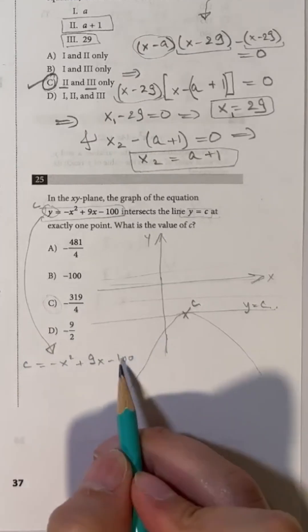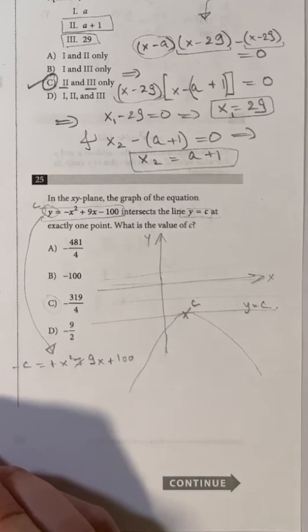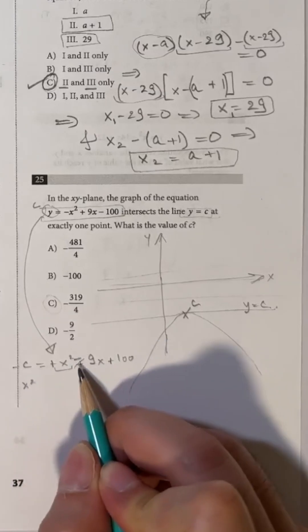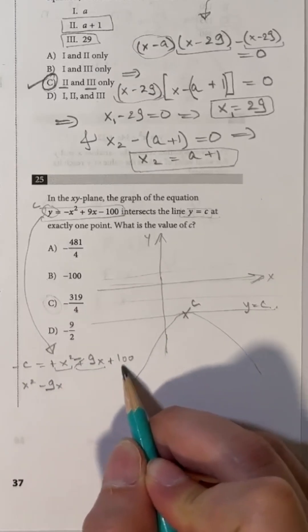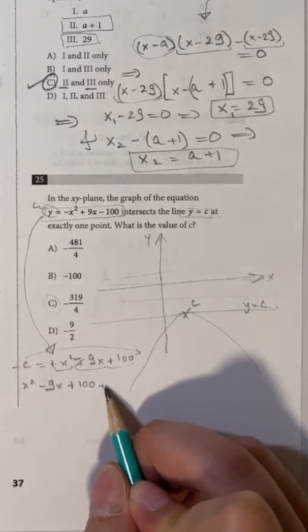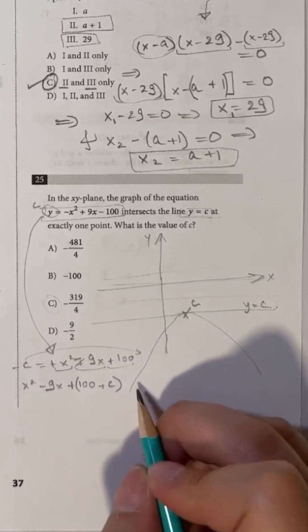Multiply the whole equation by minus 1 to get minus c equals x squared minus 9x plus 100 and move c to the right side. The equation becomes x squared minus 9x plus 100 plus c all equal to 0.